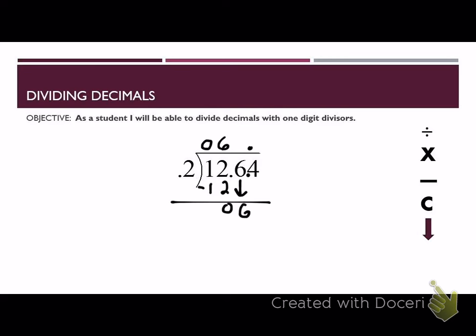How many times does 2 go into 6? And that would be 3 times. 3 times 2 is 6. 6 minus 6 gives us 0. It's less than 2. Go ahead and bring down your next number, which is a 4.